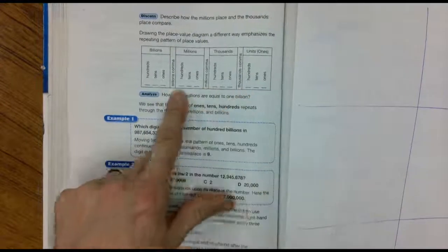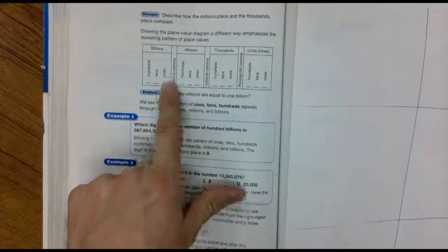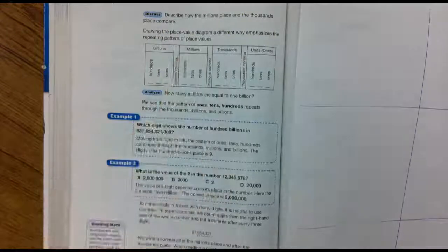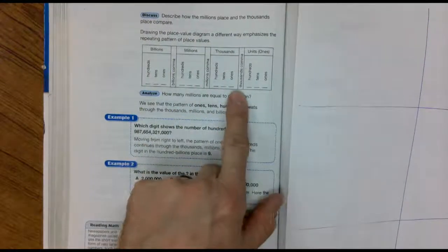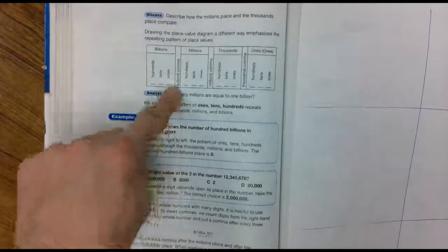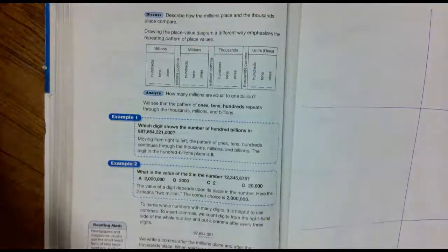Big Mac the Knight. Billions, millions, thousands. That's how I remember. Big Mac the Knight. So the first comma is the thousands. The second comma is the millions. And the third comma is the billions.